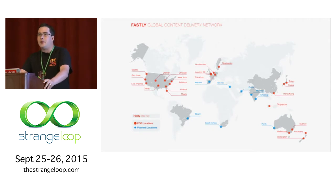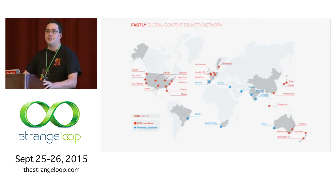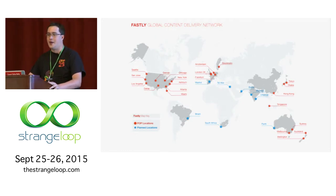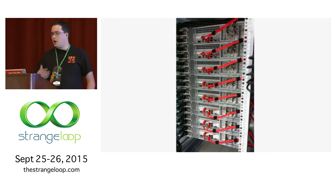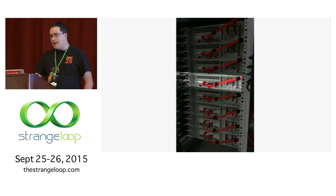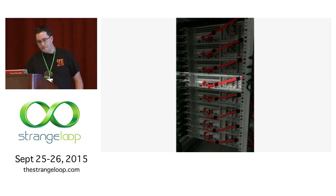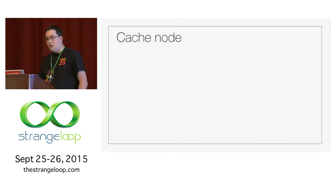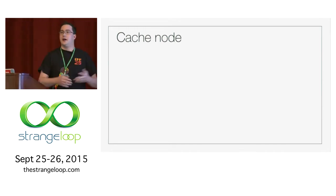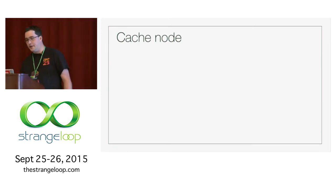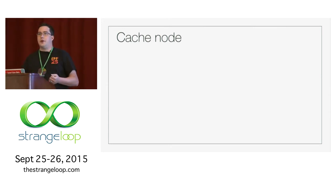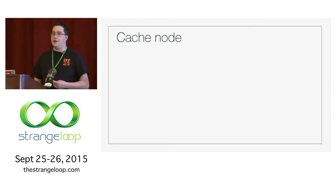A lot of the time when people at Fastly give talks, they're talking about our distributed system — the challenges coming with implementing a large global network, distributed systems problems. But I'm going to focus at something at a smaller level: something that happens in our points of presence, our POPs, and even something that happens on an individual machine level. As a content delivery network, what we do is effectively caching content for our customers and delivering it to our customers' users at a massive scale.